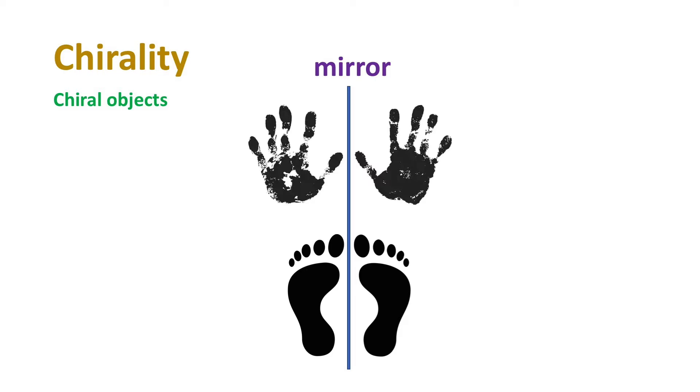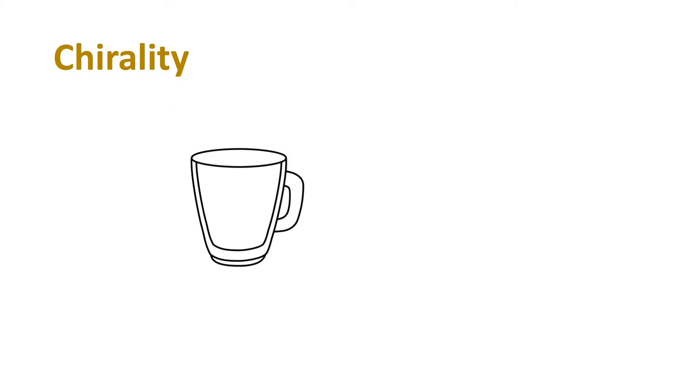However, not every object is chiral. For example, this cup is not chiral because it looks exactly the same as its mirror image. Or we can say, the left-hand one can become the right one through rotation. Such object is called achiral.